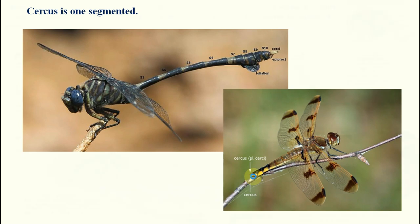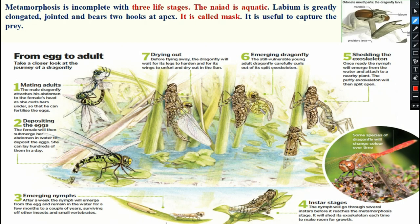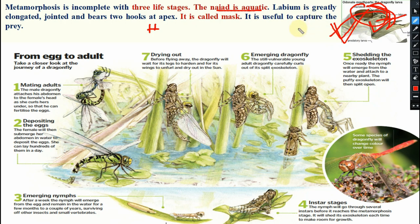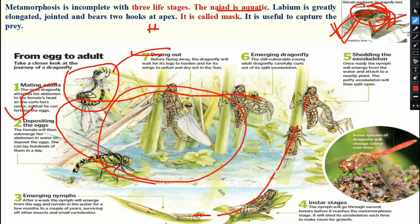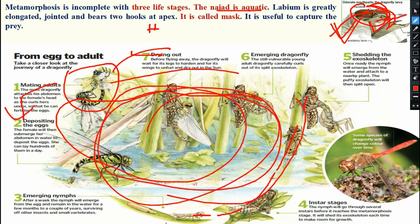Cerci are one-segmented, and there is one pair of cerci. Metamorphosis is incomplete — it is a hemimetabolous insect with three life stages. The naiad is aquatic. The labium is greatly enlarged in the naiad, forming a water-masking type mouthpart — when prey approaches, the labium closes to capture food. The life cycle: egg stage, naiad instars with molting, then adult, mating, and depositing eggs in water.